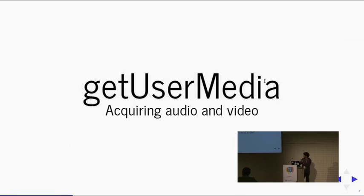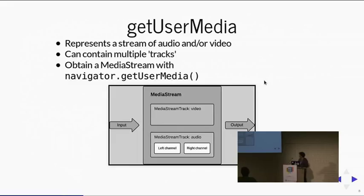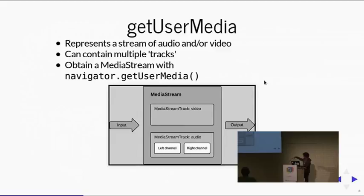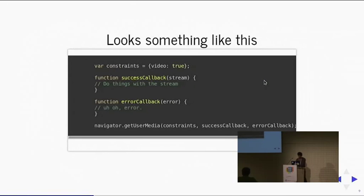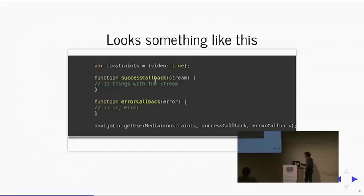First, getUserMedia — acquiring audio and video. It has a simple API. Navigator is the global object and navigator.getUserMedia gets you all the audio and video tracks. You pass in a constraints object to specify resolution and whether you want audio, video, or both. It provides you with tracks — video track and audio track — and you get channels like left and right channel for audio. You pass in a success callback for when you get the stream, and an error callback for when something goes wrong.